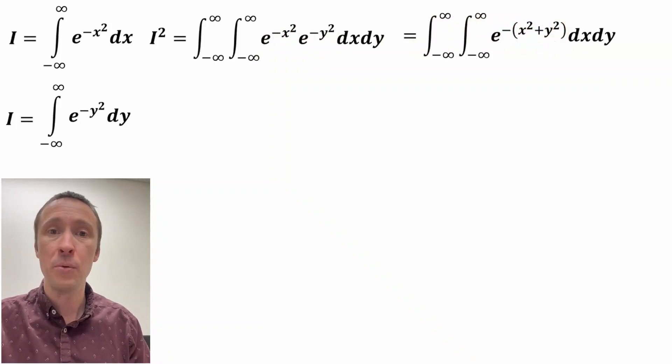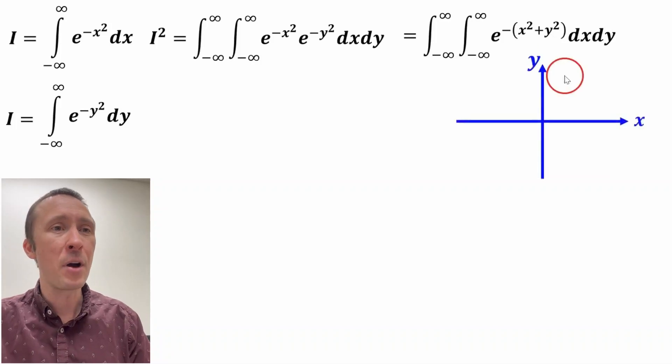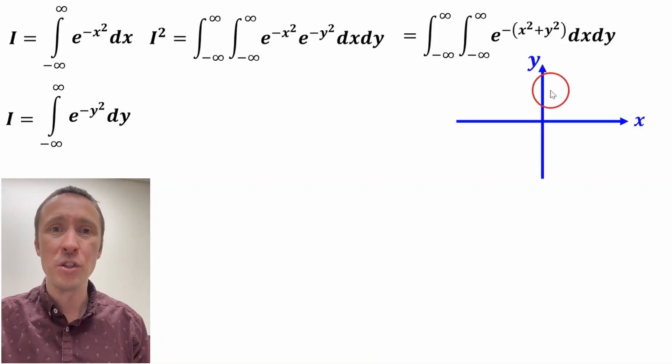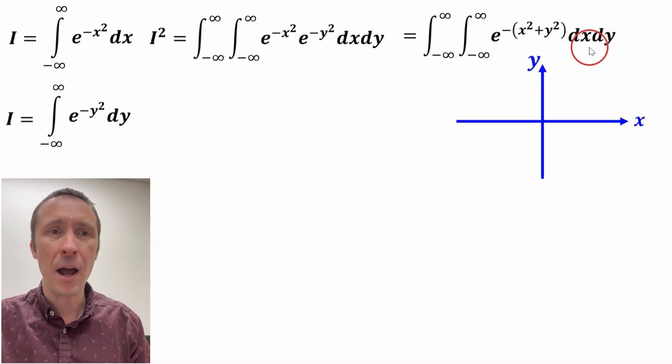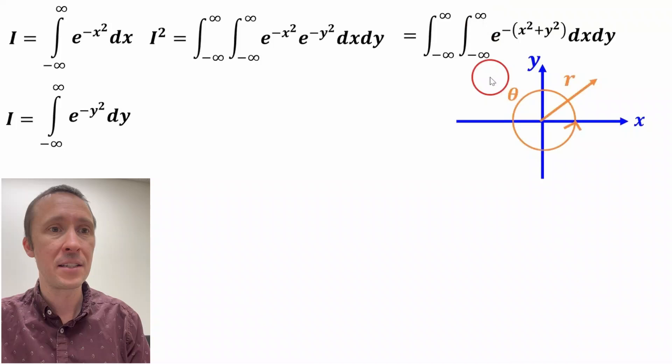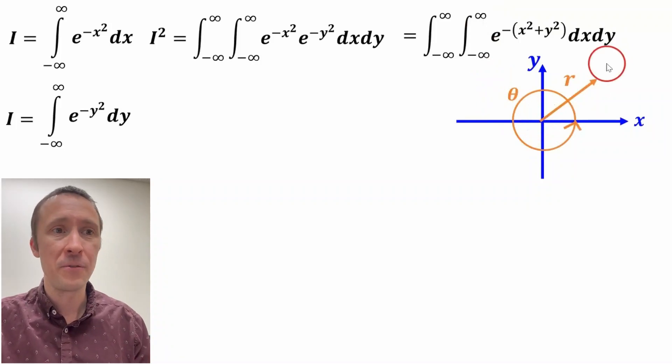And at this point, we're going to convert to polar coordinates. Now I'm not going deep into how to do polar coordinates, but essentially x and y both go from negative infinity to infinity. So in polar coordinates, r is going to go from zero to infinity and theta is going to go from zero to 2π.